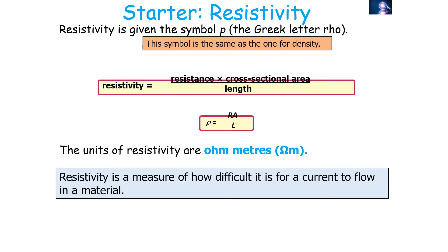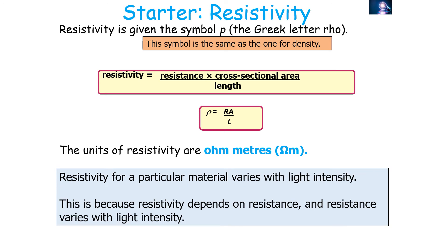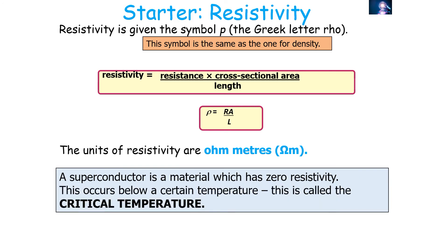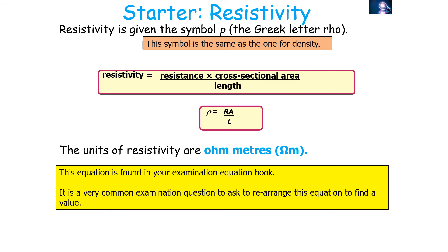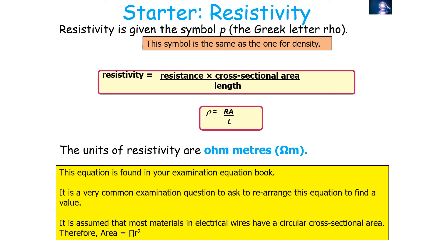Resistivity is a measure of how difficult it is for current to flow through a material. Resistivity for a particular material varies with temperature, so it is usually quoted for a particular temperature, because resistivity depends on resistance and resistance changes with temperature. Resistivity also varies with light intensity, because resistance varies with light intensity. A superconductor is a material with zero resistivity, which occurs below a certain temperature called the critical temperature. The equation ρ = RA/L is found in the examination equation book. Since most materials are in wire shape with a circular cross-section, the area used is πr² or πd²/4.